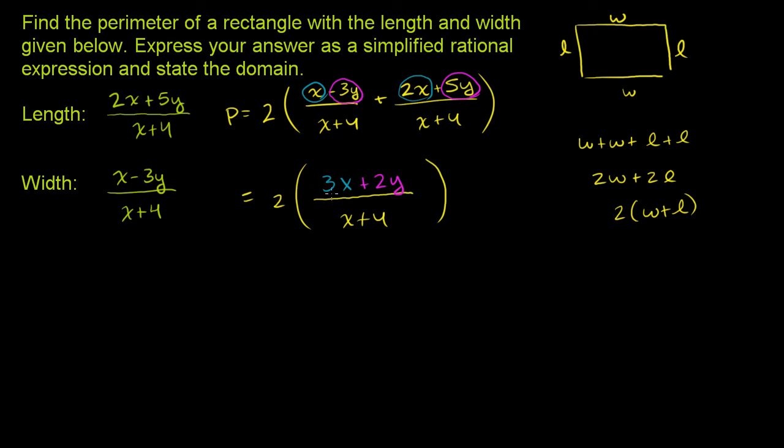We can distribute this 2. 2 times 3x is 6x, and 2 times 2y is 4y. All of that over x + 4.